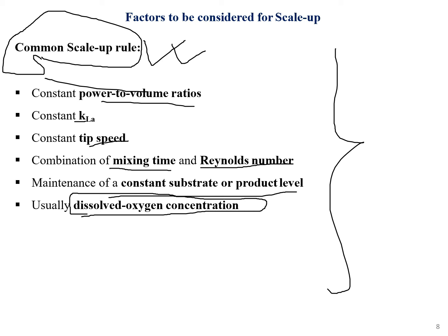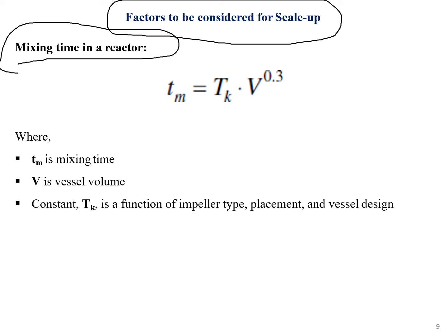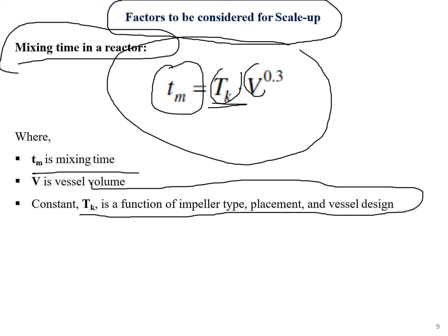Dissolved oxygen concentration should generally be maintained at a minimal rather than high value. Regarding mixing time in a reactor, the formula is: tm = tk · V^0.3, where tm is mixing time, tk is a constant (a function of impeller type, placement, and vessel design), and V is the vessel volume.